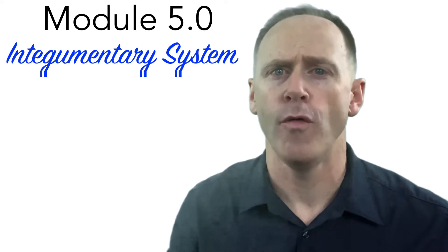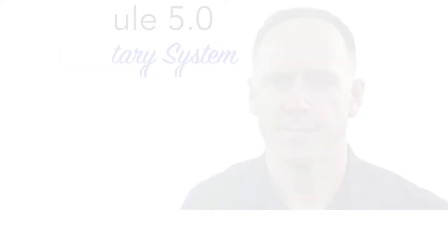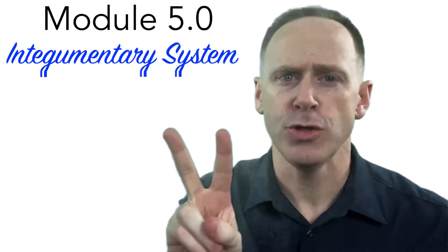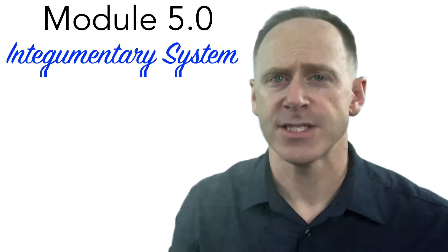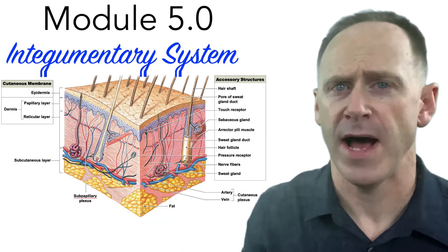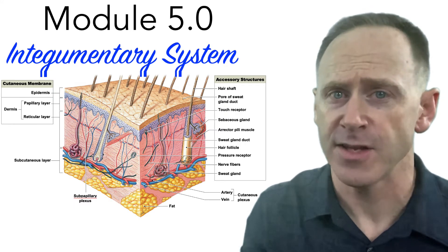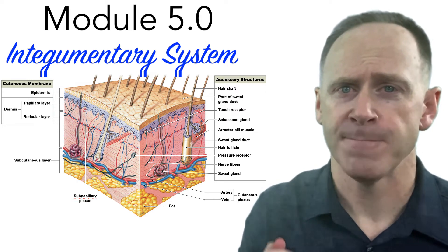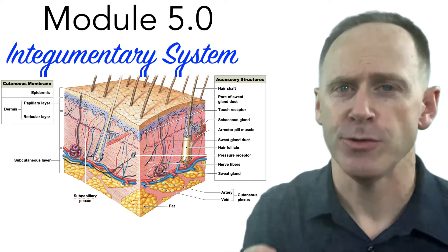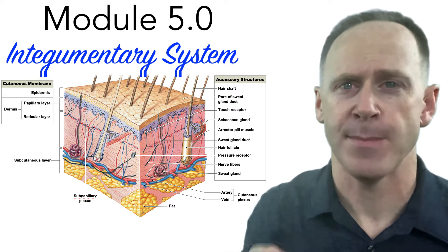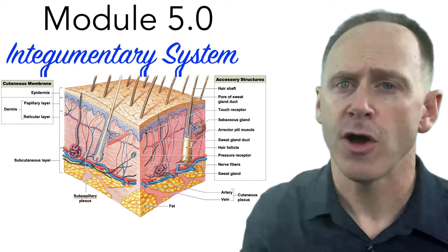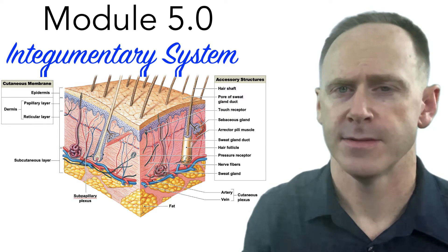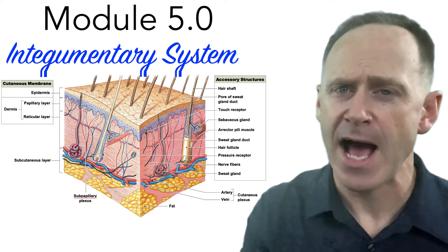Let's begin our study of the integumentary system with a brief overview of its basic anatomy and physiology. The integumentary system has two major parts: the skin and its accessory structures. We learned in module 4.5 that the body has four types of tissue membranes made of connective tissue with epithelial linings, namely mucous membranes, serous membranes, synovial membranes, and cutaneous membranes. The skin is a cutaneous membrane made of a stratified squamous epithelium and an underlying layer of connective tissues called the dermis. The accessory structures include hair, exocrine glands, and nails, which are lined with epithelia but often protrude down into the dermis below.